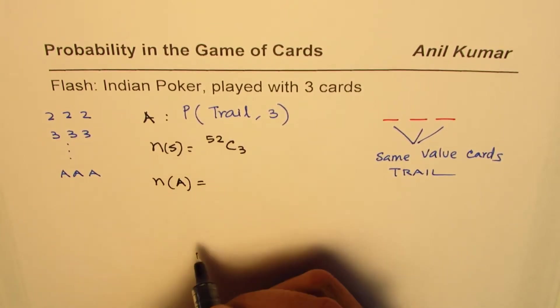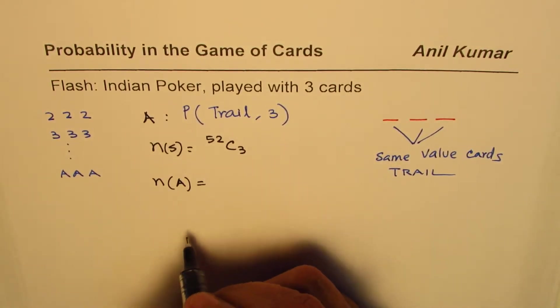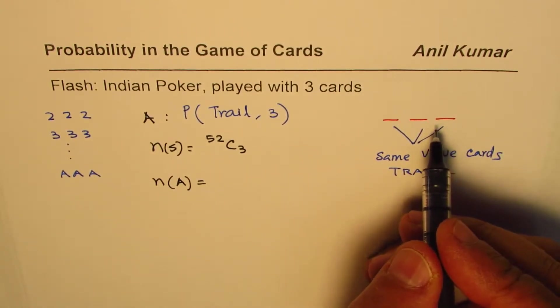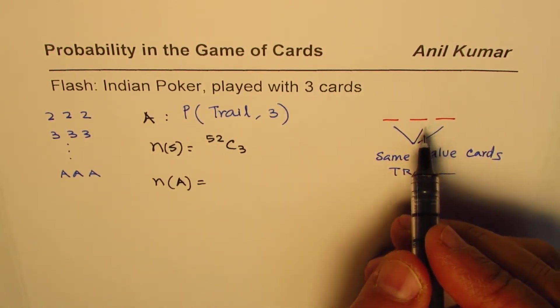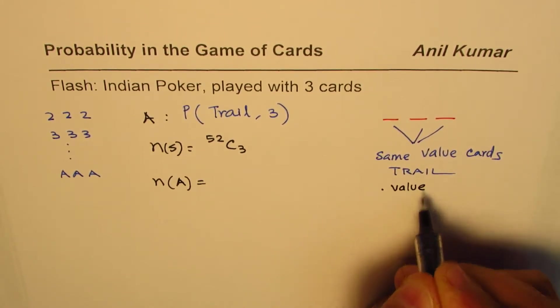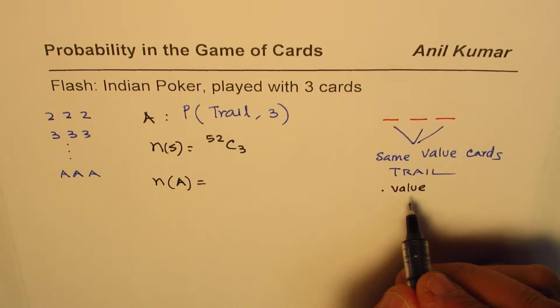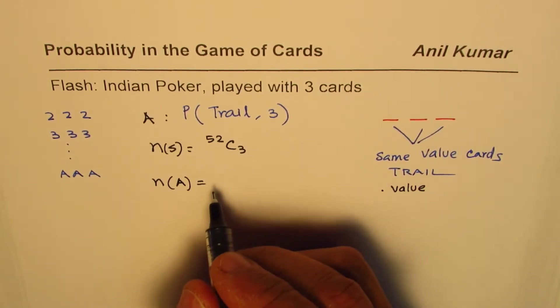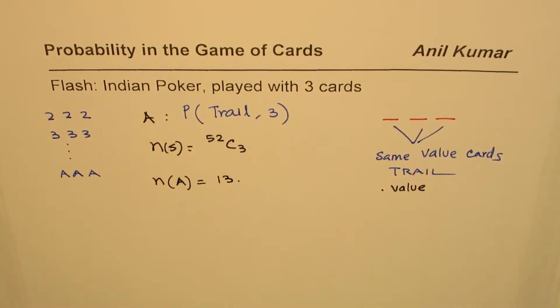First we'll consider the value of card. How many options are there? We have 13 - from two, three, four, five, six, seven, eight, nine, ten, jack, king, queen and ace. So 13 of them, so that becomes 13 options.